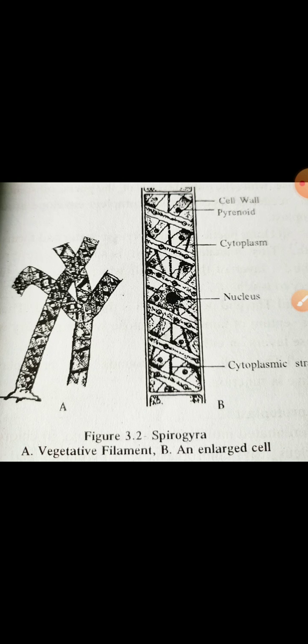The habitat of Spirogyra: it occurs in still water ponds, lakes, pools, and ditches as submerged or free-floating filaments forming floating masses.